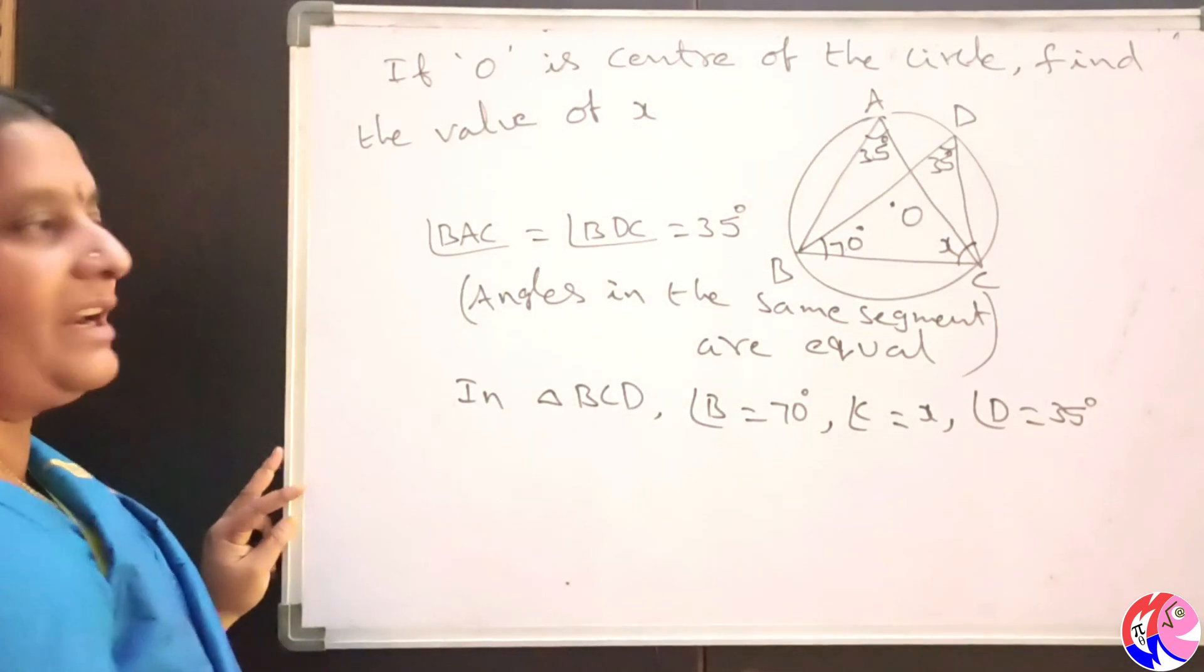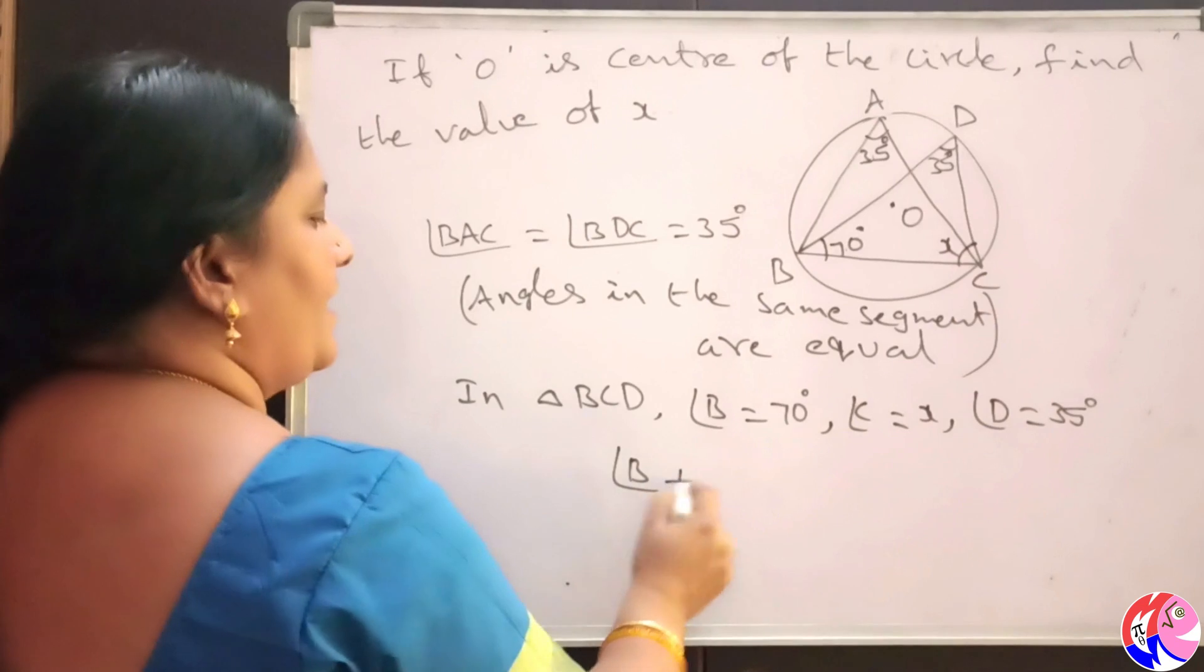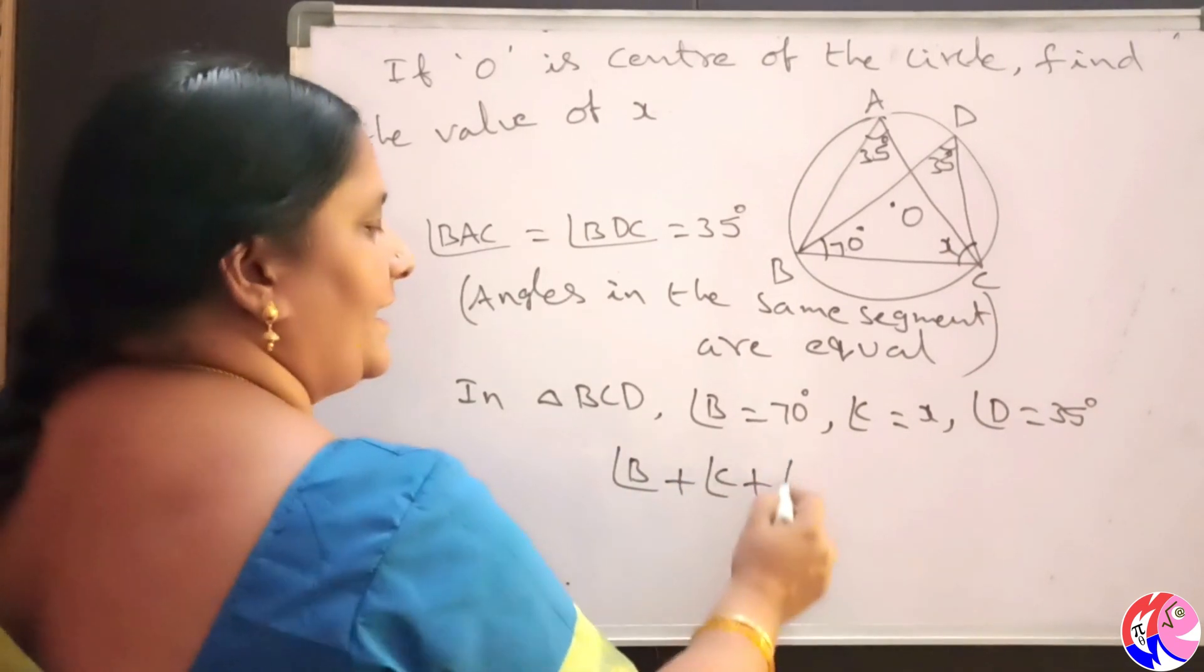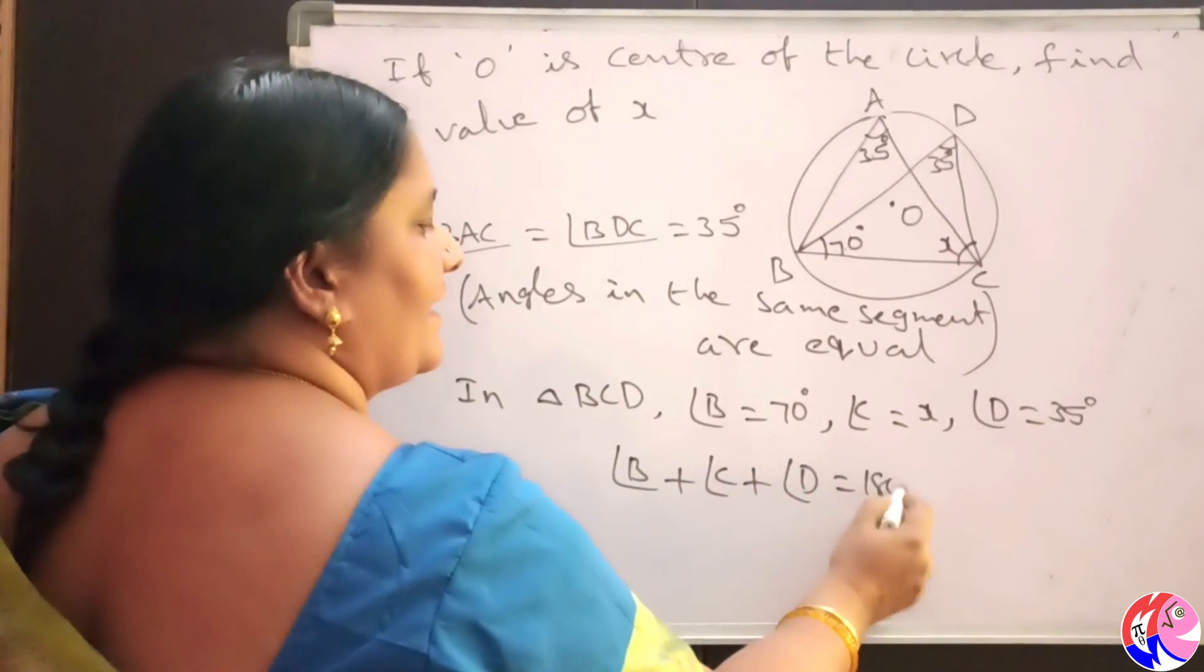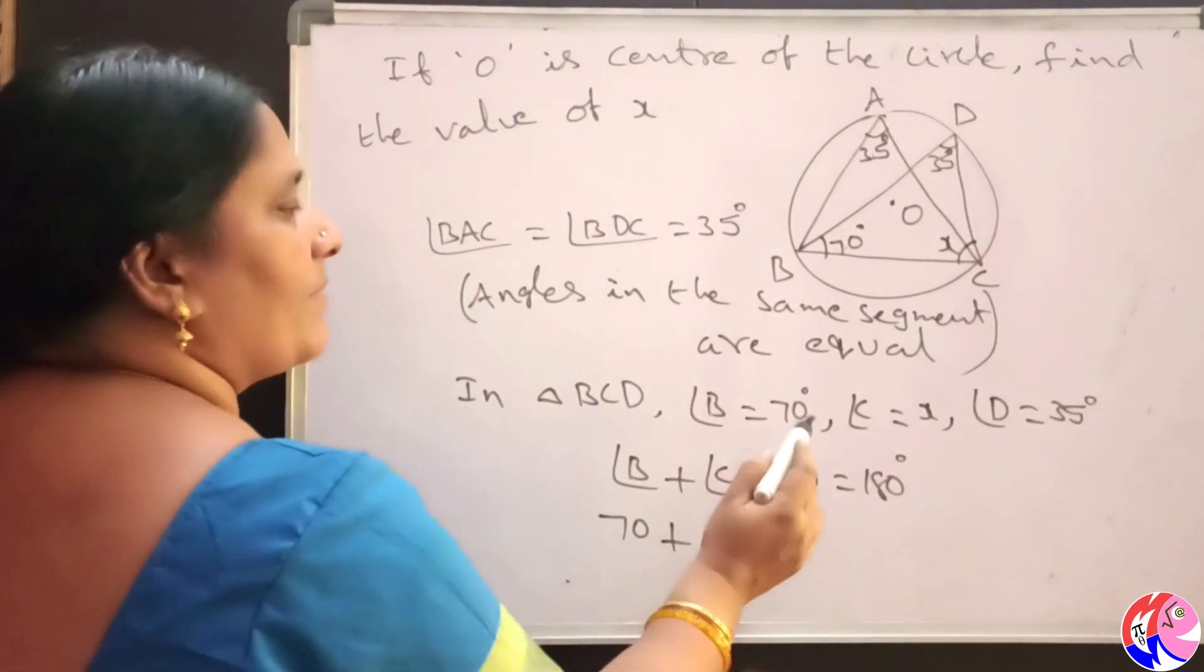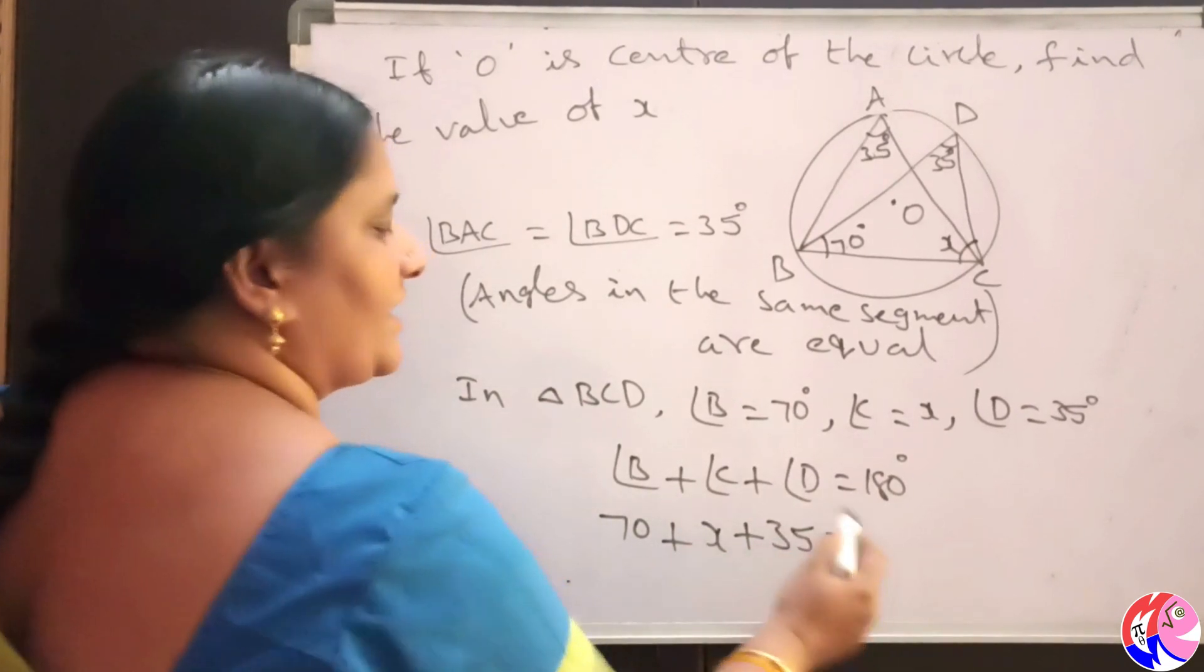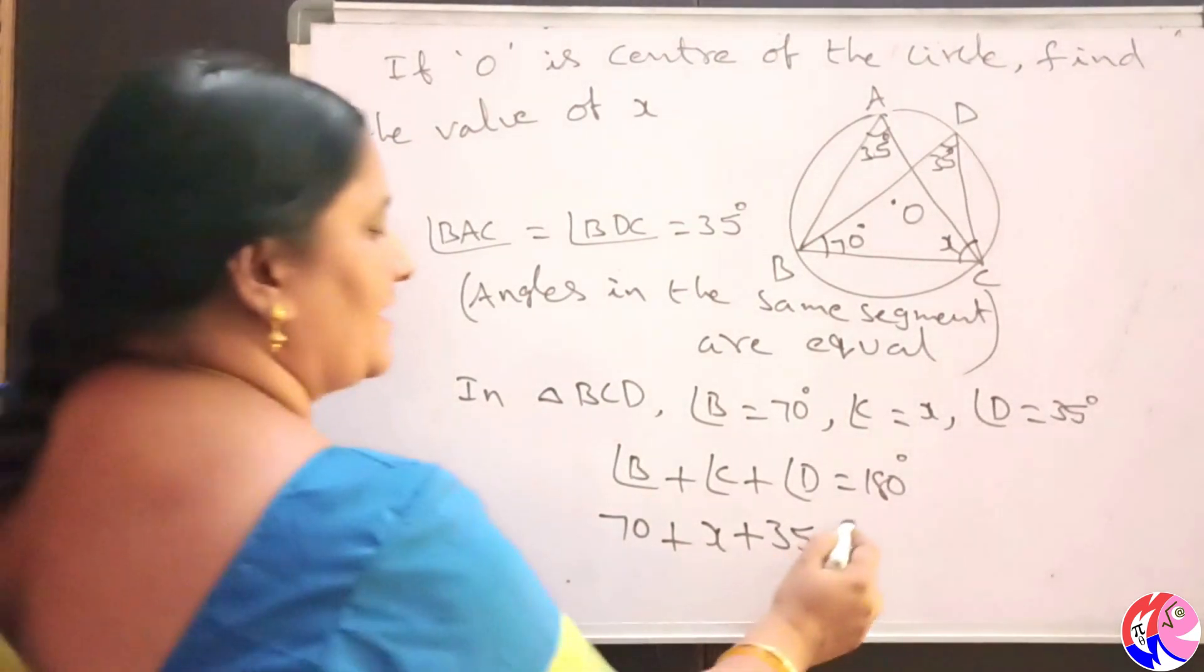Apply angle sum property in this triangle BCD. Angle B plus angle C plus angle D equal to 180 degrees. Angle B measure is 70 plus angle C measure is x plus D measure is 35 is equal to 180.